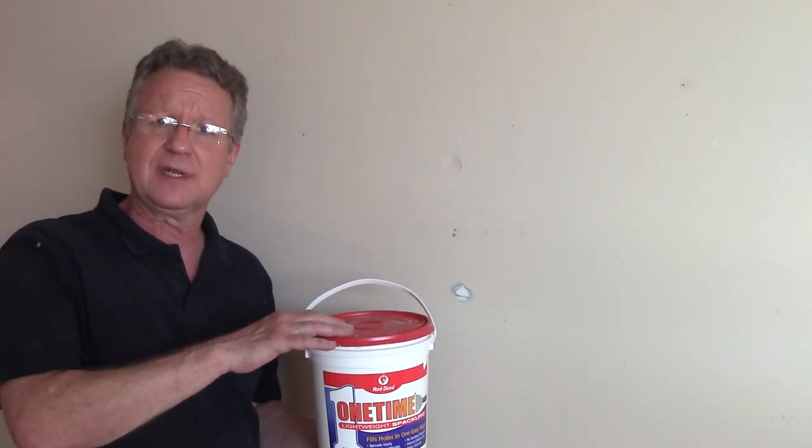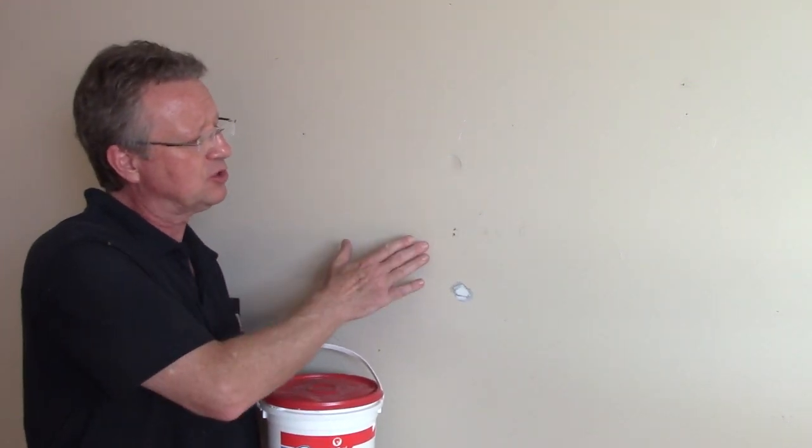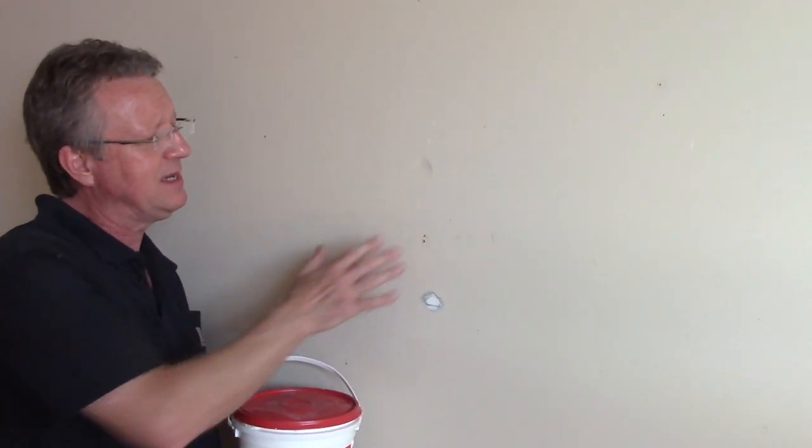You'd want to stir this thoroughly before you use it, and then use a scraper or your drywall knife and knock off any particles around the dents, cracks, or holes.